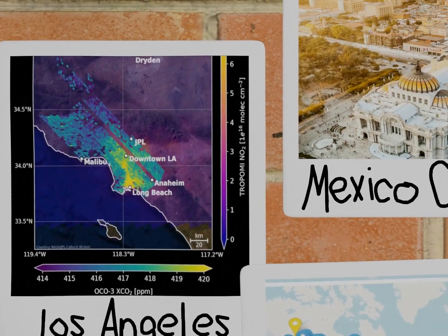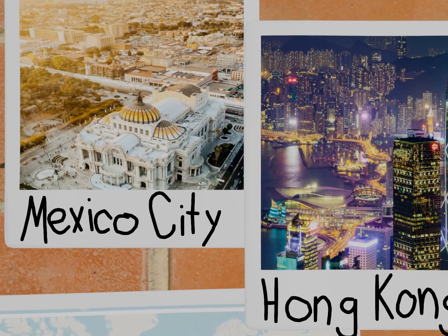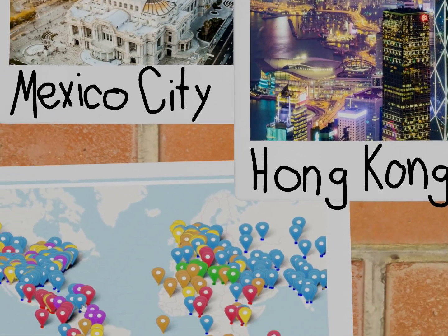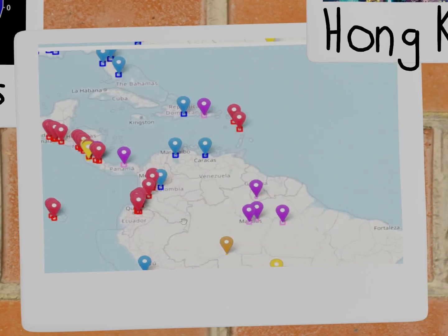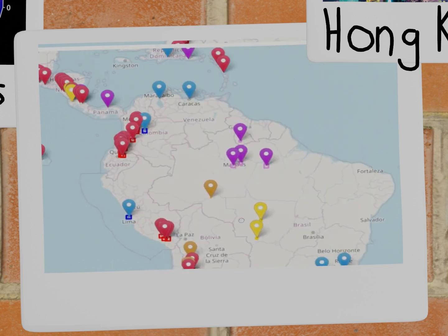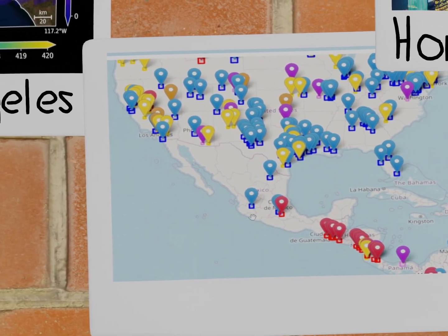On sunny days, these satellite instruments see Los Angeles, Mexico City, Hong Kong, you name it. You can even look at the OCO3 website, find your city, and get its carbon map for different times of year.